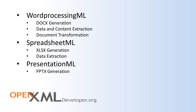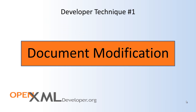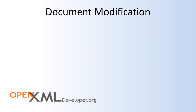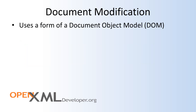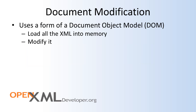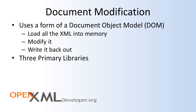In terms of the approaches you can use to write these types of applications, the first and most accessible technique is document modification. Document modification uses a form of a document object model — you load all the XML into memory, you modify that XML, and you write it back out. With OpenXML in .NET, there are mainly three primary libraries you will use for implementing a document modification approach.